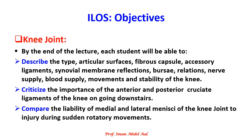In these two lectures, we are going to study the type, the articular surfaces, the fibrous capsule, the accessory ligaments, the synovial membrane reflections, the bursae, the relations, nerve supply, blood supply, movements, and stability of the knee joint. We will also analyze the importance of the anterior and posterior cruciate ligaments of the knee going downstairs, and compare between the liability of medial and lateral menisci to injury during sudden rotatory movements.